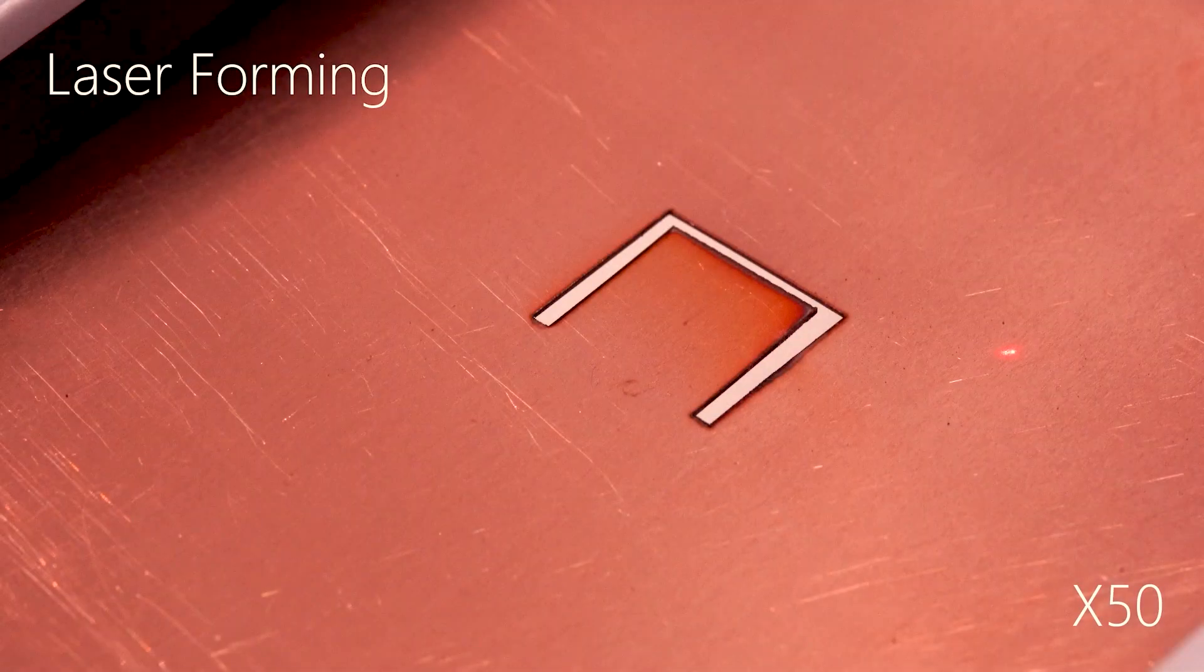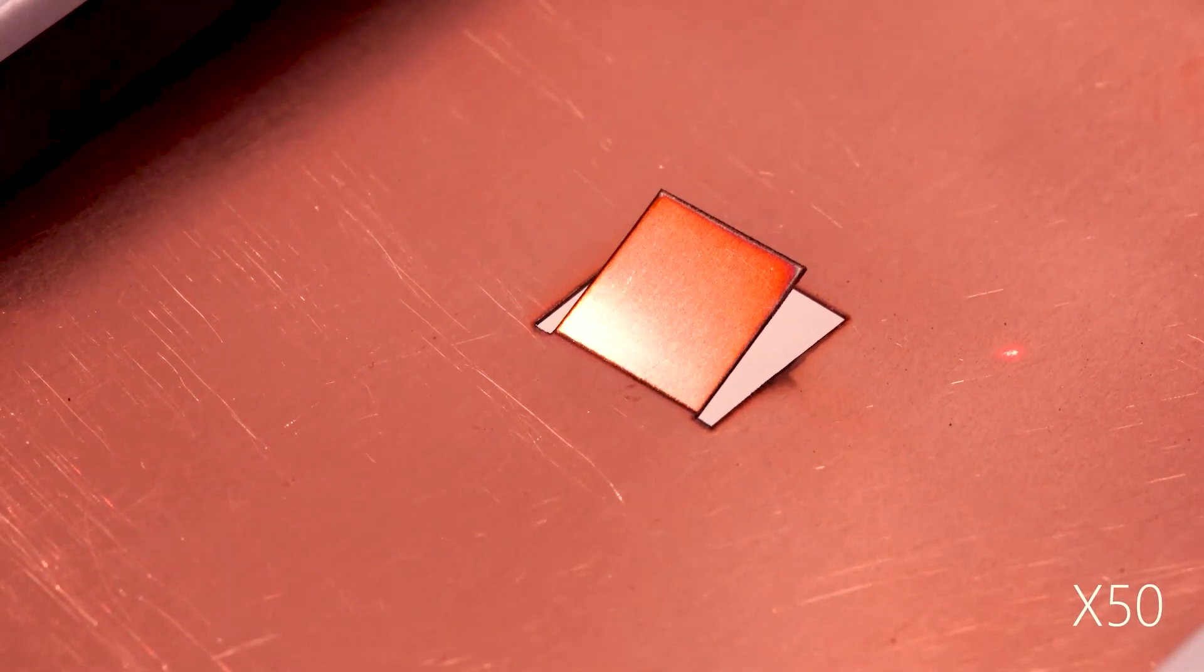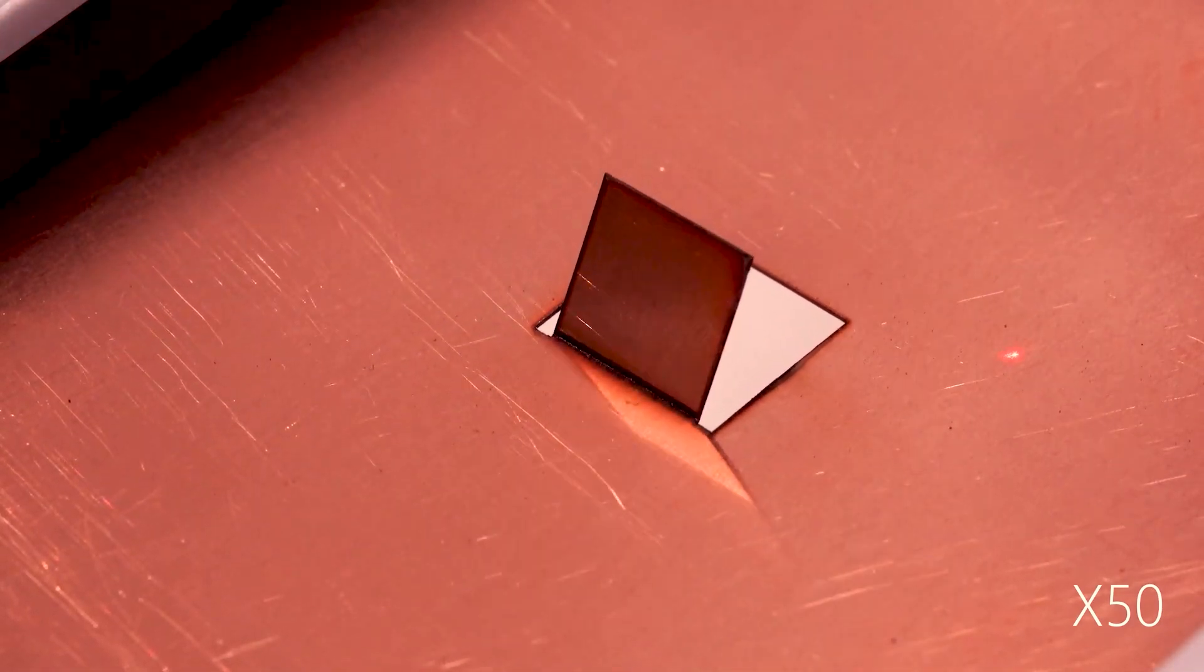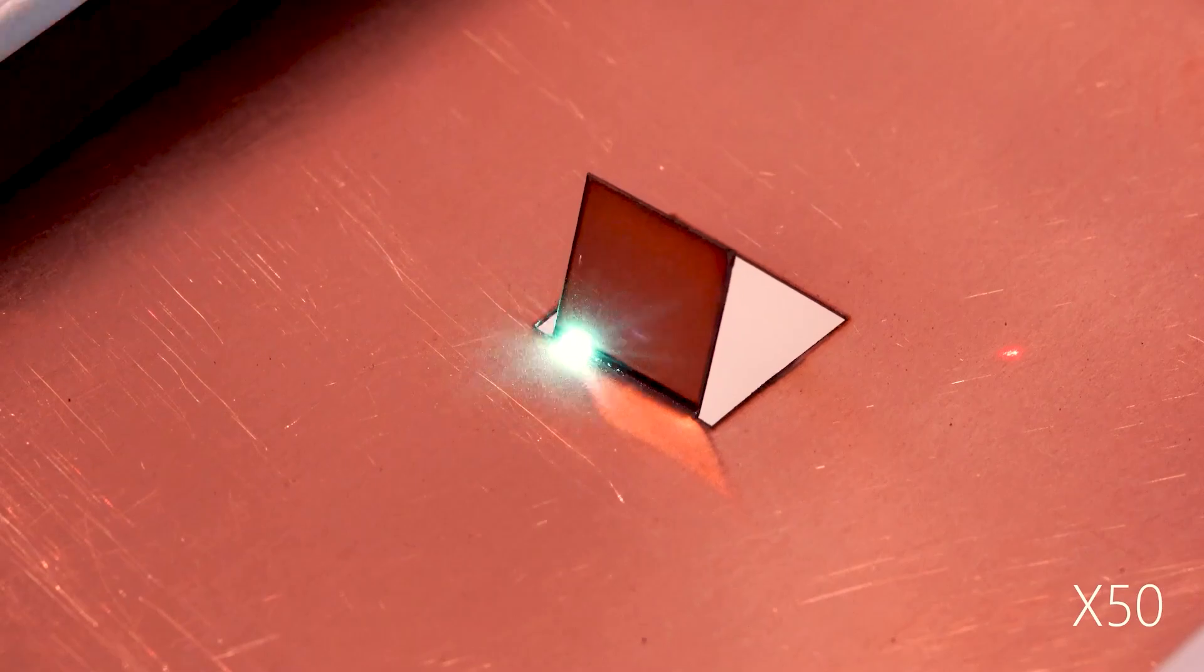With calibrated laser parameters, uneven expansion through material thickness allows us to achieve laser forming on circuit boards. This allows unconventional shapes and topologies in the PCB outcome.